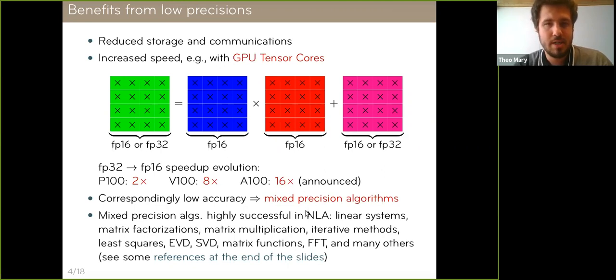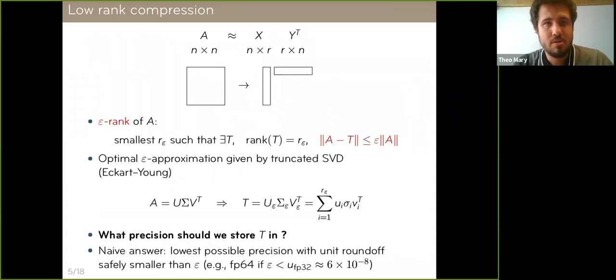There is a clear motivation to use these low precisions, but the correspondingly low accuracy that they can provide is usually not sufficient in most general purpose applications. For this reason, there is a renewed interest in mixed precision algorithms that combine these low precisions with higher ones. Looking at NLA, the mixed precision algorithms have been quite successful. Iterative refinement is probably the most famous example, but in recent years, there's been a mixed precision variant of most of the major NLA kernels. This is precisely the objective of this work. We want to derive a mixed precision variant of an important NLA kernel, which is low rank compression.